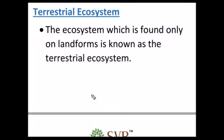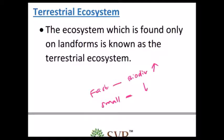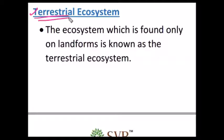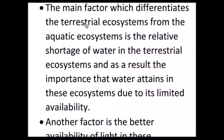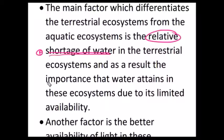So fast-moving water carries more dissolved oxygen than slow-moving water, which means fast-moving water has richer biodiversity, while slow-moving water has less biodiversity. Now let us move to the second major ecosystem type, that is the terrestrial ecosystem. The ecosystem found only in landforms can be called a terrestrial ecosystem. One major feature is that the relative shortage of water in the terrestrial ecosystem is the major limiting factor.